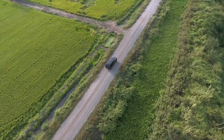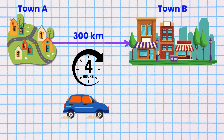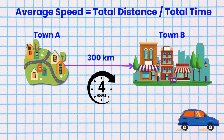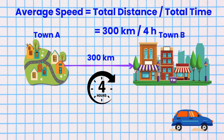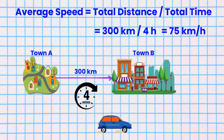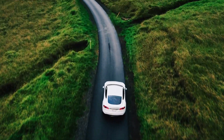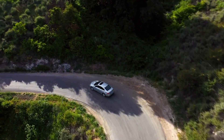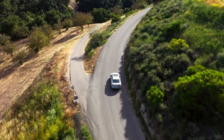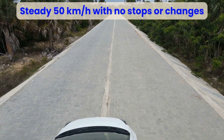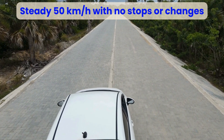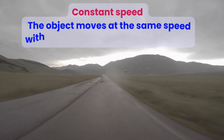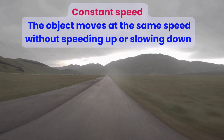Suppose Mole and her mom travel 300 kilometers over a 4-hour trip from town A to town B. Their average speed for the whole journey equals total distance divided by total time, which equals 300 kilometers divided by 4 hours, and that equals 75 kilometers per hour. Keep in mind the car was not traveling at exactly 75 kilometers per hour the entire time. The average speed simply reflects the overall pace with instantaneous speeds varying throughout the trip. If Mole and her mom drove on a long straight road at a steady 50 kilometers per hour with no stops or changes, they were moving at a constant speed — meaning the object moves at the same speed without speeding up or slowing down.